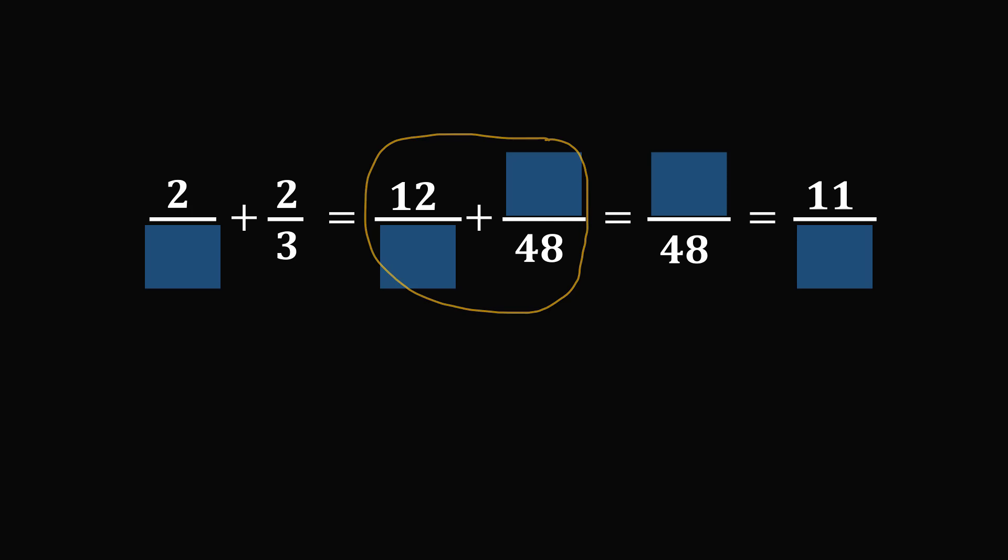We have a denominator that's equal to 48, and we know that will be scaled from a denominator that is equal to 3. So how much is this denominator scaled by? Well, 48 divided by 3 is equal to 16.